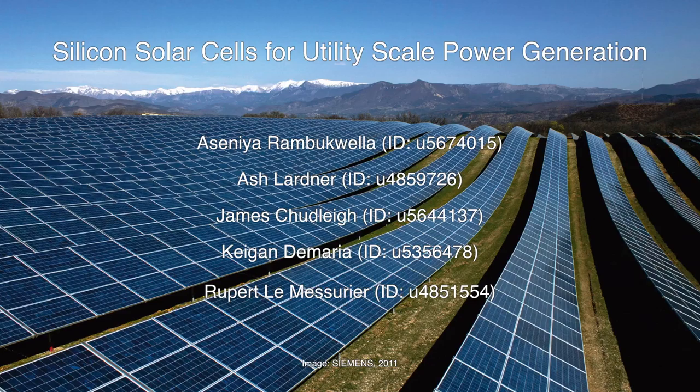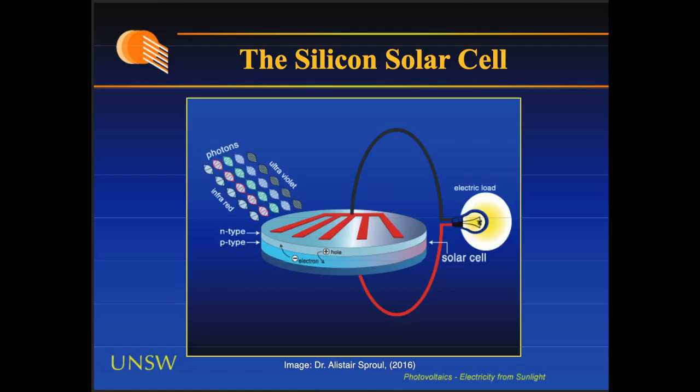Poly and monocrystalline silicon are the most common and well-researched material structures used for PV cells and account for 93% of the global market.